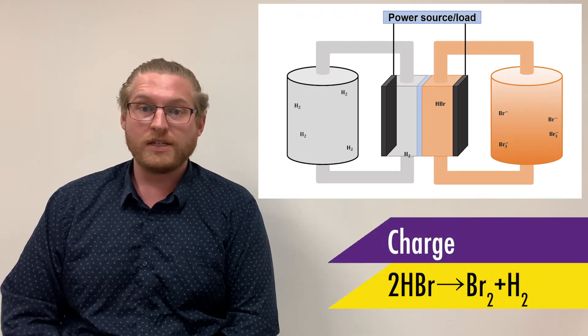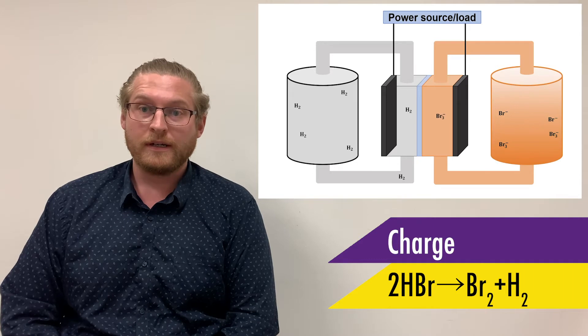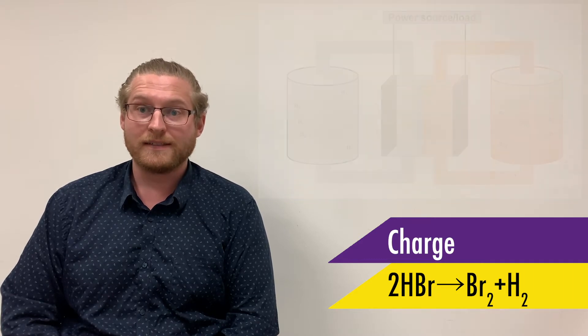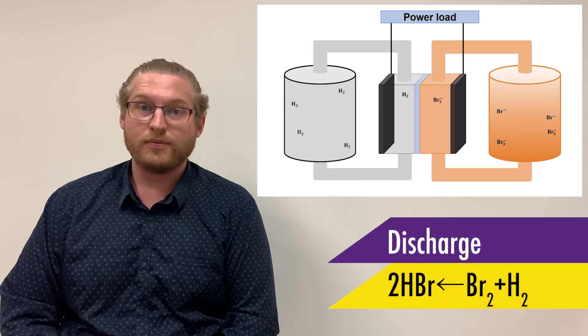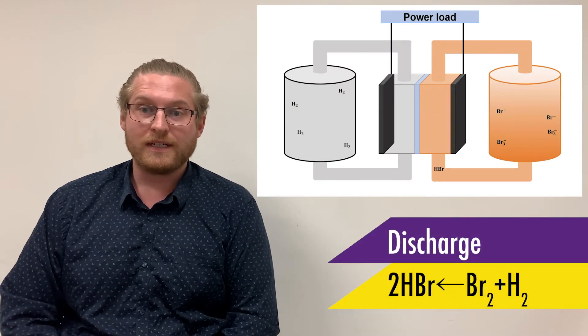During charging, hydrobromic acid is converted to bromine, whilst the protons travel through the membrane and form hydrogen gas. Discharge sees the opposite occur, with the hydrogen split into protons and the bromine oxidizes to form bromide, reforming the hydrobromic acid.